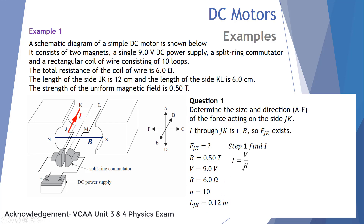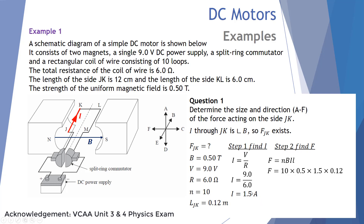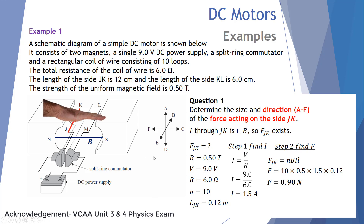Step 1: Find the current using Ohm's law: I = V/R = 9/6 = 1.5 A. Step 2: Find the force using F = NBIL, where N = 10, B = 0.5 T, I = 1.5 A, L = 0.12 m. F = 10 × 0.5 × 1.5 × 0.12 = 0.90 N. For direction, using the right-hand slap rule with thumb into the page (current direction) and fingers from left to right (field direction), the palm pushes down — so the force on JK is downwards (option D).